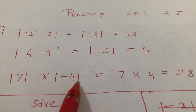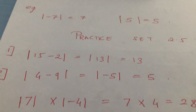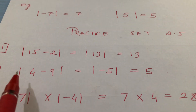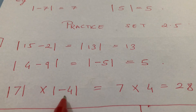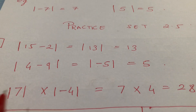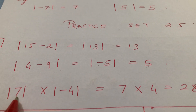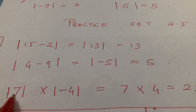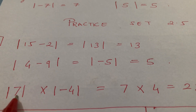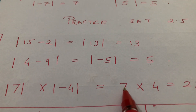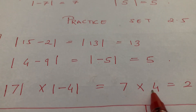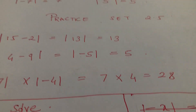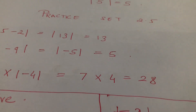Now, mod of 7 multiplied by mod of minus 4. Here there are two different modulus signs, so you solve them separately. Mod of minus 7 is 7, mod of minus 4 is 4, so 7 times 4 is 28. Simple as that.